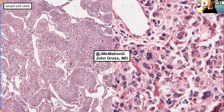Here we have an example of small cell osteosarcoma — the left being low power, the right being intermediate to high power. You can see purple-pink matrix mineralization throughout within a filigree pattern of primitive small blue cells. On the right you can appreciate this matrix mineralization better, with these relatively small primitive cells showing a little cytologic atypia, which directly produce this matrix mineralization.